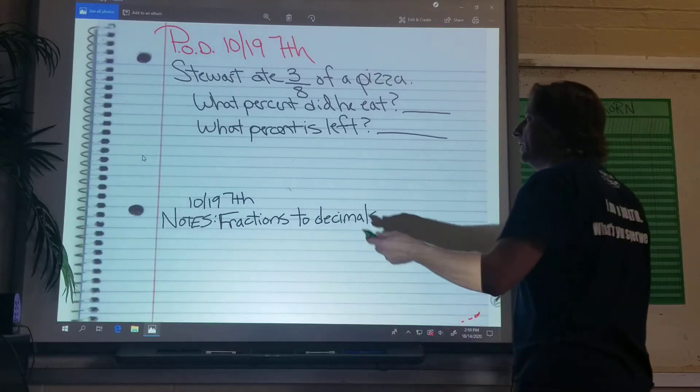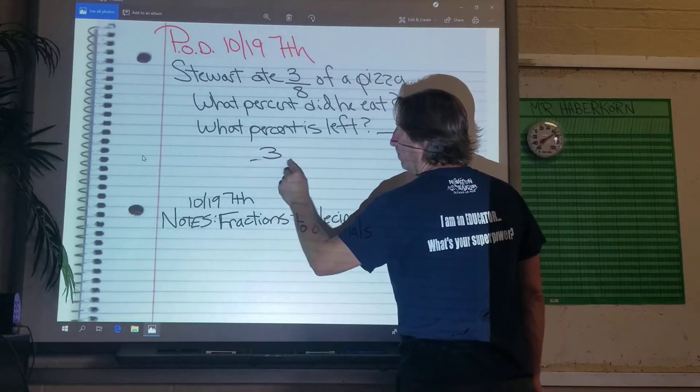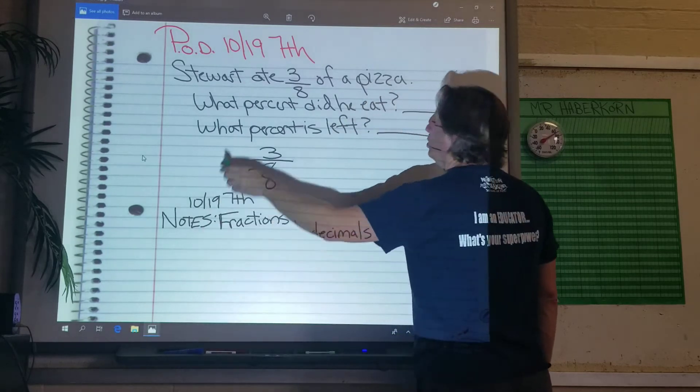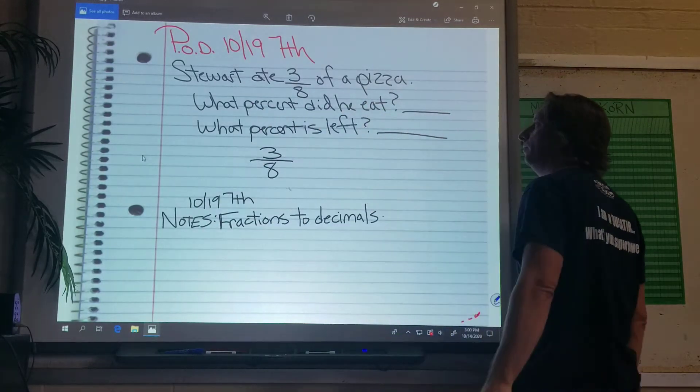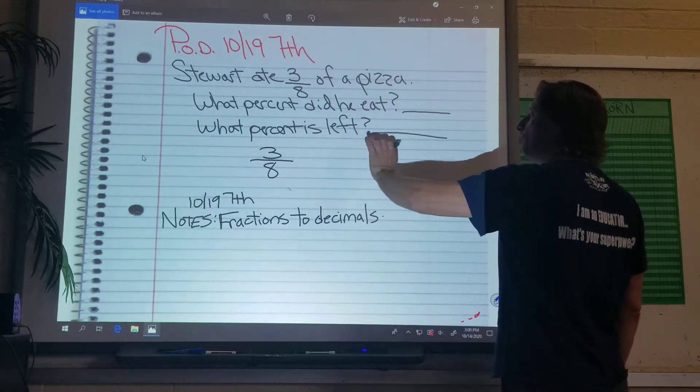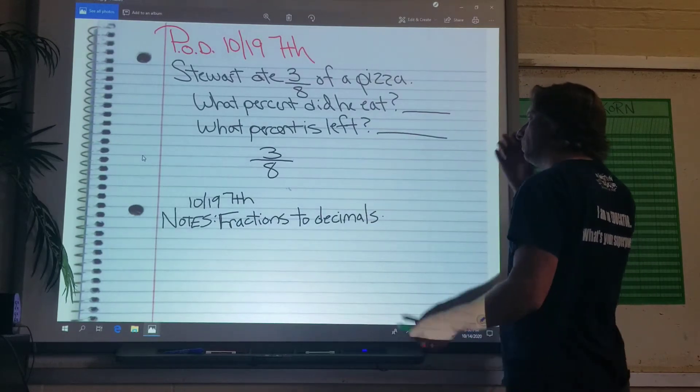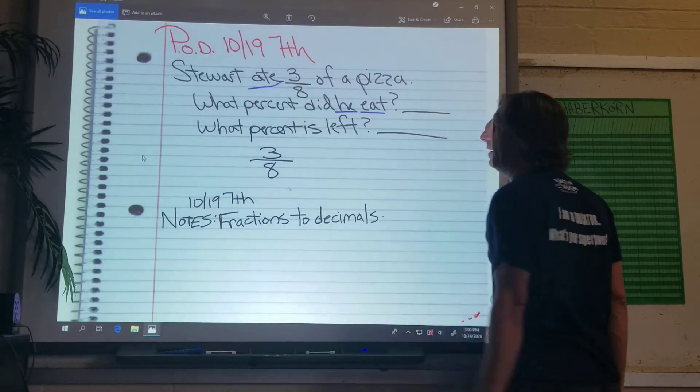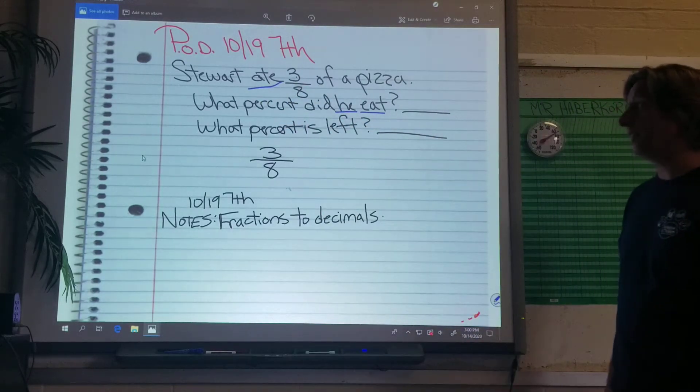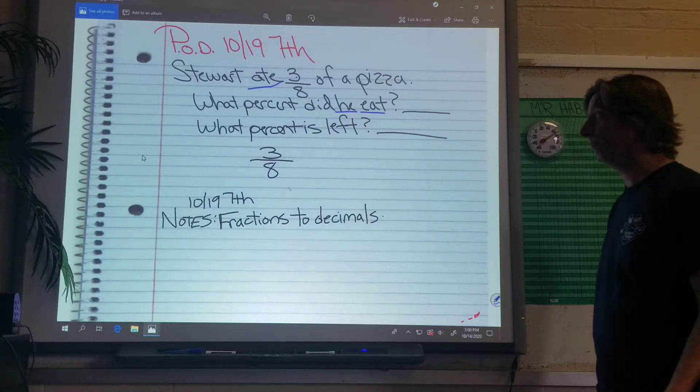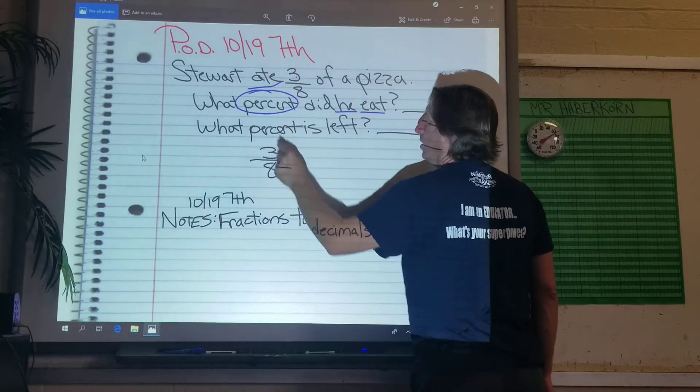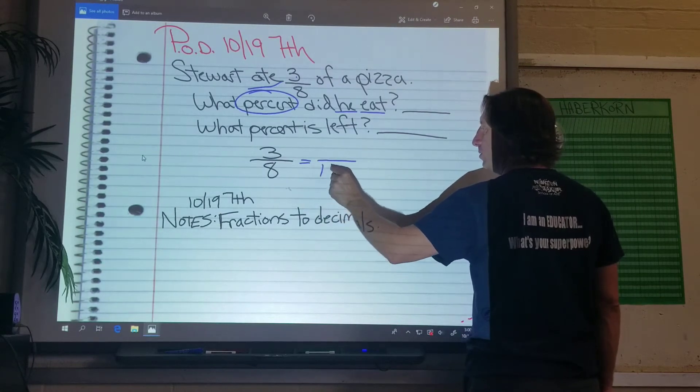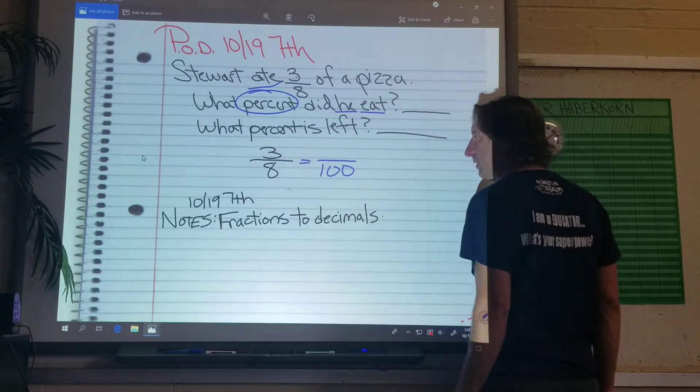Alright, so Stuart ate 3 eighths of a pizza. I want to know, what percent did he eat? Well, and this is what percent is left. We'll worry about that later. What percent did he eat is what's important, because that's the information they gave us, right? So a percent is always out of what? See this magic word? That means it's out of 100, right? So we're going to force this fraction to be out of 100. So he ate 3 pizzas out of 8 in the pizza, right?